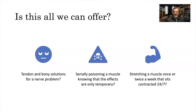I challenge all of us: is this all we can offer? Tendon and bony solutions for a nerve problem — is that really the answer? Serially poisoning a muscle, knowing the effects are only temporary and eventually they will develop immunity. Stretching a muscle once or twice a week that sits contracted 24-7 seems like a tall order.